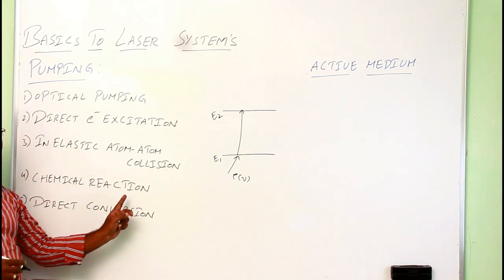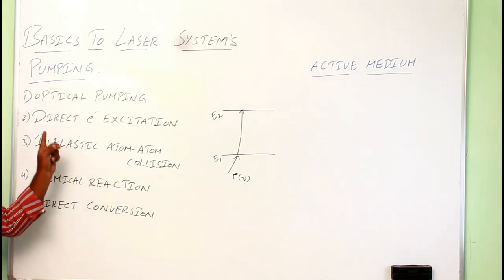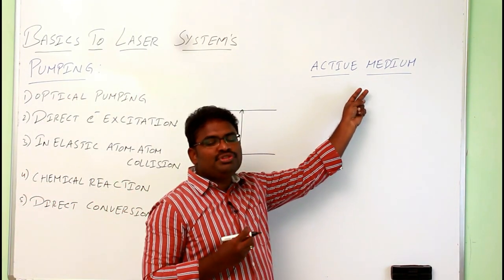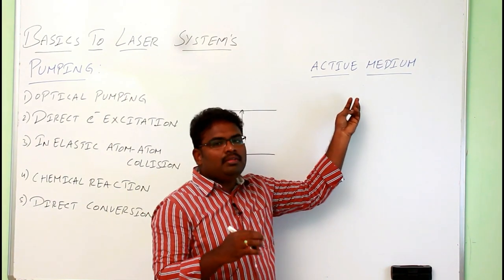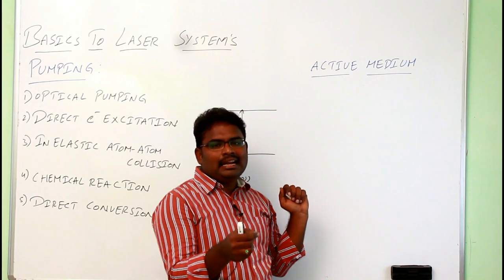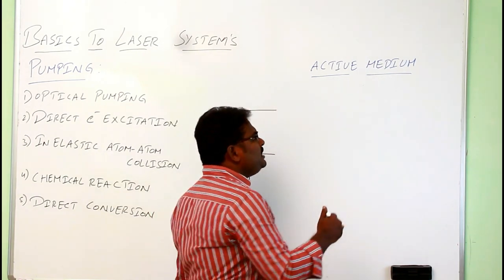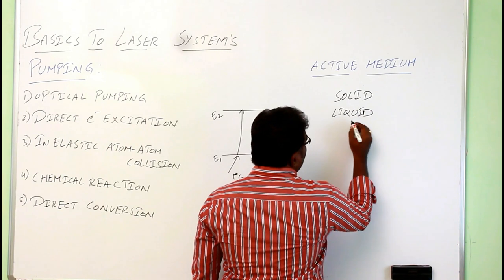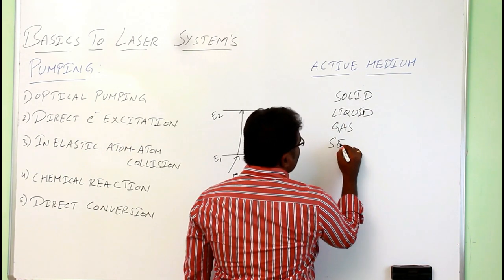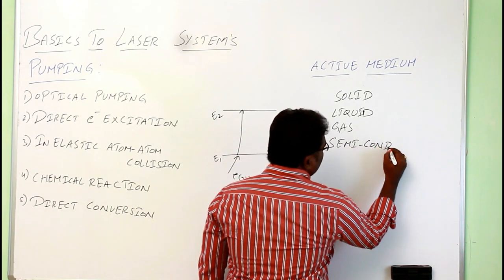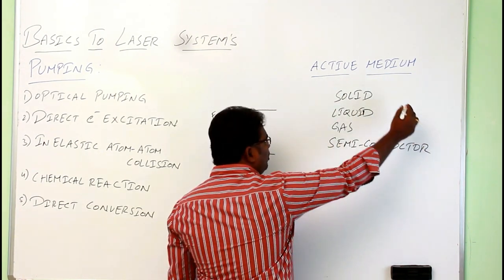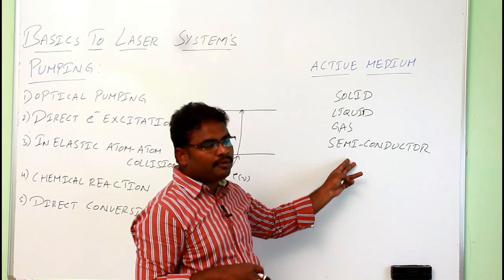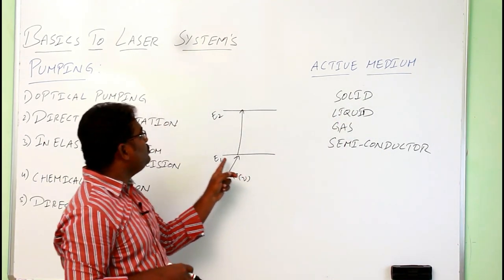The type of pumping is chosen based on the type of active medium. The active medium is the material from which we are supposed to produce the laser light — that is, what kind of material we are using to produce the laser light. The active medium may be a solid, liquid, gas, or semiconductor. Based on the type of active medium, we have to choose the pumping system.